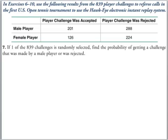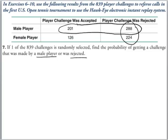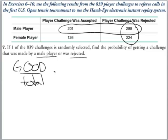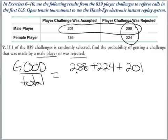What happens when the question gets a little bit more difficult? Now one of the 839 challenges is selected. Find the probability of getting a challenge that was made by a male player or was rejected. So now we're going to still choose one but we got to figure out our good are both male players or things that are rejected. So visually all of these are good, but aren't all the male players also good?